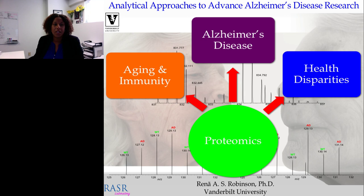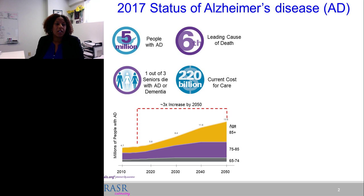While we also look at aging, immunity, and health disparities in Alzheimer's disease, today I'm mostly going to focus on work with animal models of disease. In the United States, as of 2017, there were five million people diagnosed with Alzheimer's disease — making it the sixth leading cause of death in the country.